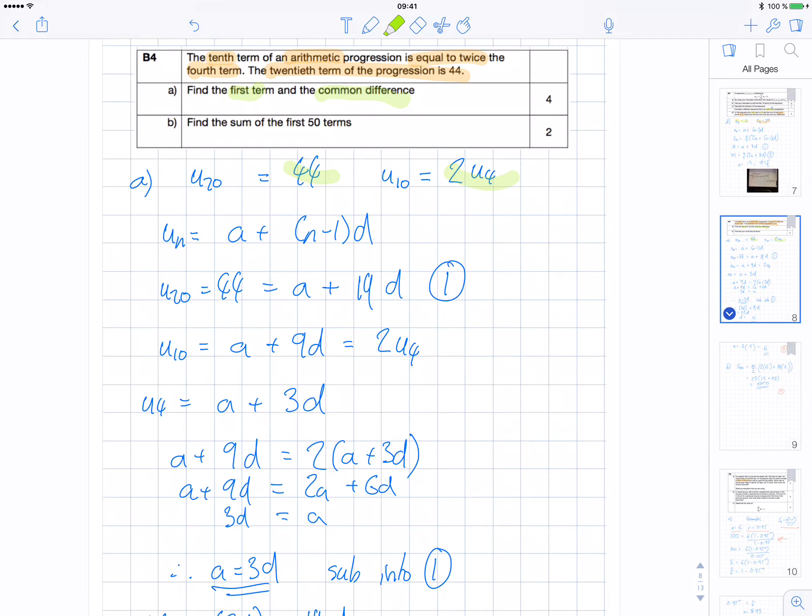The general formula for an arithmetic progression sequence is un equals a plus n minus 1 times d.